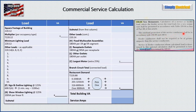The overload protection of the service conductor shall be in accordance with 230.90 and 240.4 — that doesn't apply to us here. Also, feeder conductors shall not be required to be of greater ampacity than the service conductors. Lastly, service or feeder conductors whose calculated load is determined by this optional calculation shall be permitted to have the neutral load determined by 220.61. Most calculations allow their neutral load to be determined by 220.61, though not all.